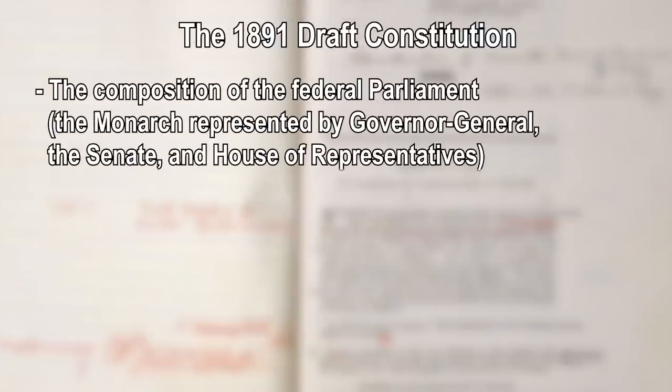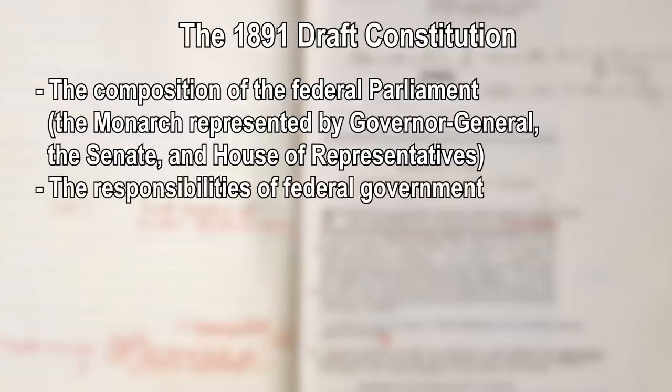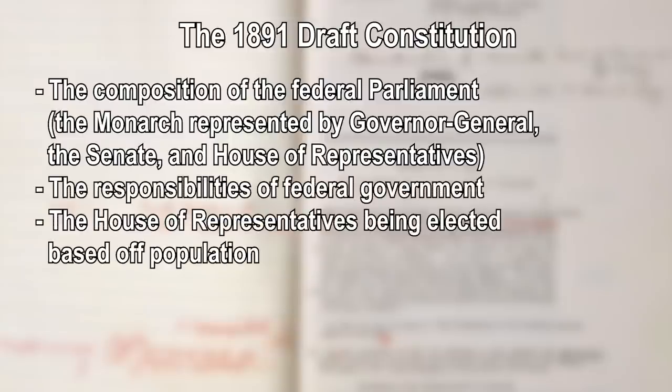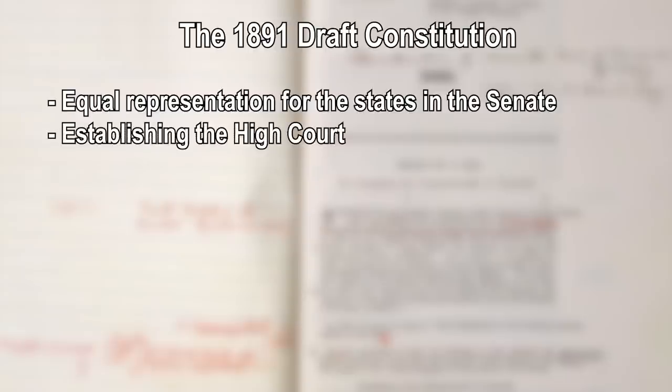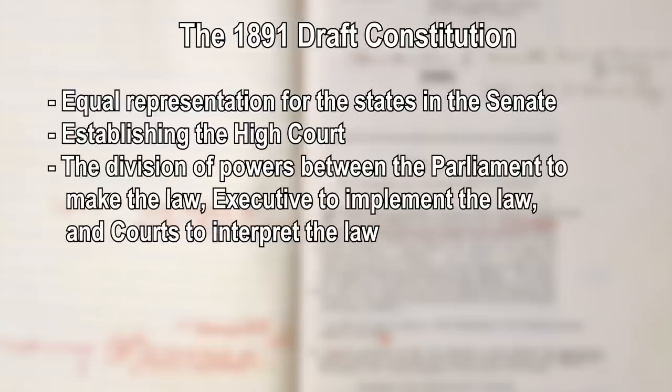The key features of the draft constitution included the composition of the federal parliament — the monarch represented by the Governor-General, the Senate, and the House of Representatives — as well as the responsibilities of that federal government. The House of Representatives were to be elected based on population, there would be equal representation for the states in the Senate, and it would establish the High Court. It also outlines the division of powers: the parliament has the power to make the law, the executive to implement the law, and the courts to interpret the law.